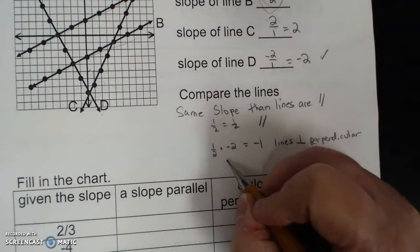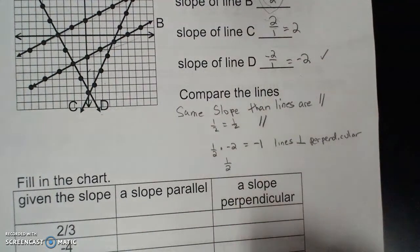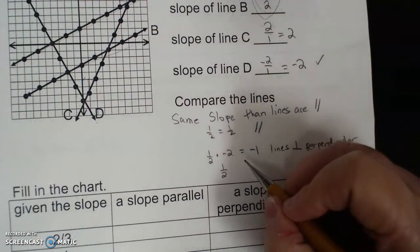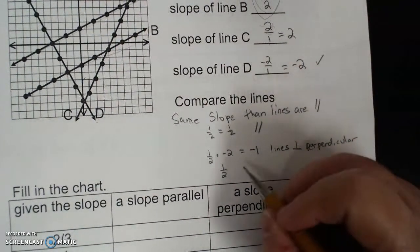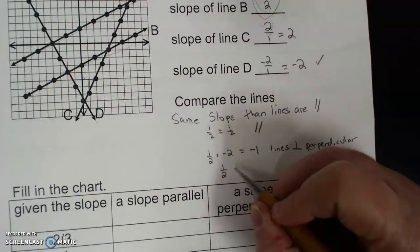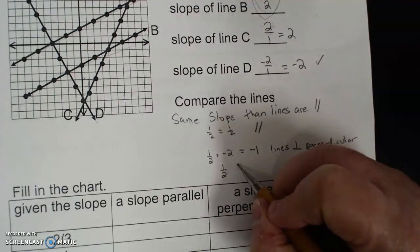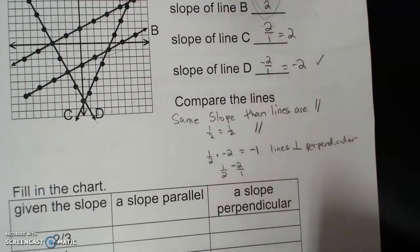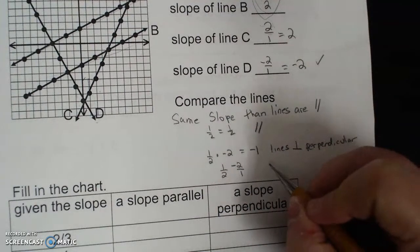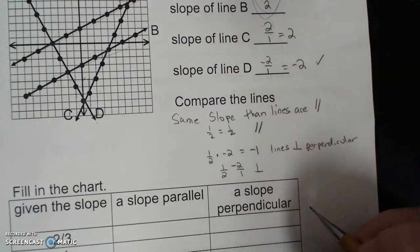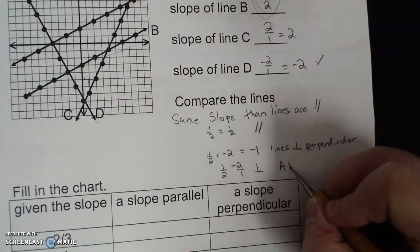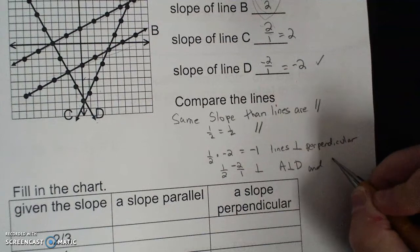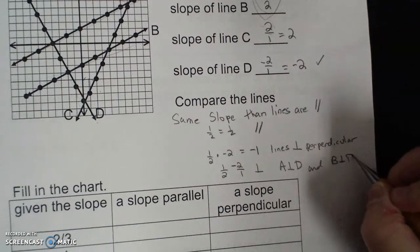Another way to say it is: if I take 1 half and I do the opposite reciprocal — which means I turn the fraction upside down and change its sign — then they are perpendicular. So A is perpendicular to D, and B is perpendicular to D.